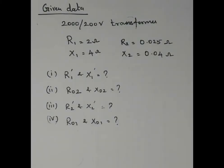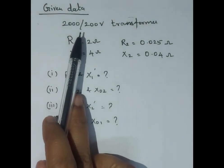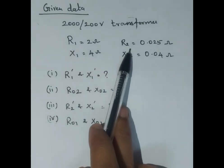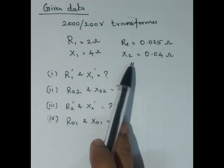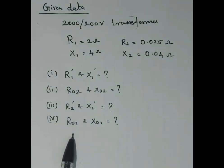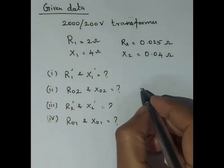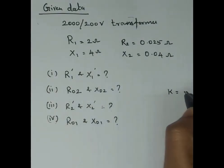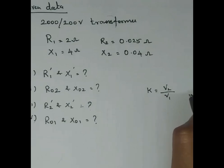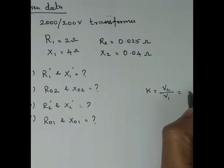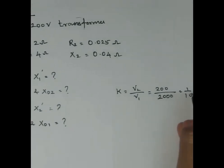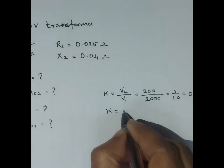From the problem, the given data is: V1 and V2 are the voltages, R1 and X1 are the primary resistance and reactance, and R2 and X2 are the secondary resistance and reactance. We need the transformation ratio K, which equals V2 divided by V1, or N2 by N1. Using voltages: K = 200 divided by 2000.